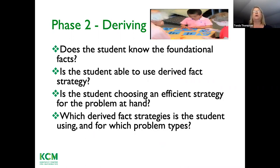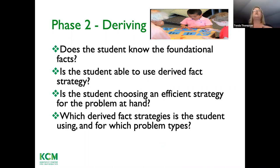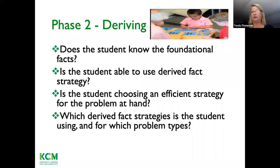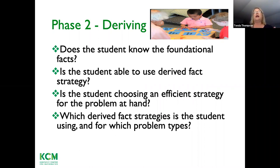Phase two will come once the child is able to do the counting. Think about what counting involves: one-to-one correspondence, cardinality, and being able to hold a number and count on from it. Once able to do that, the student is ready to work on deriving facts. They have to have the foundational facts — what are those foundational facts they need to know before they can use deriving facts?